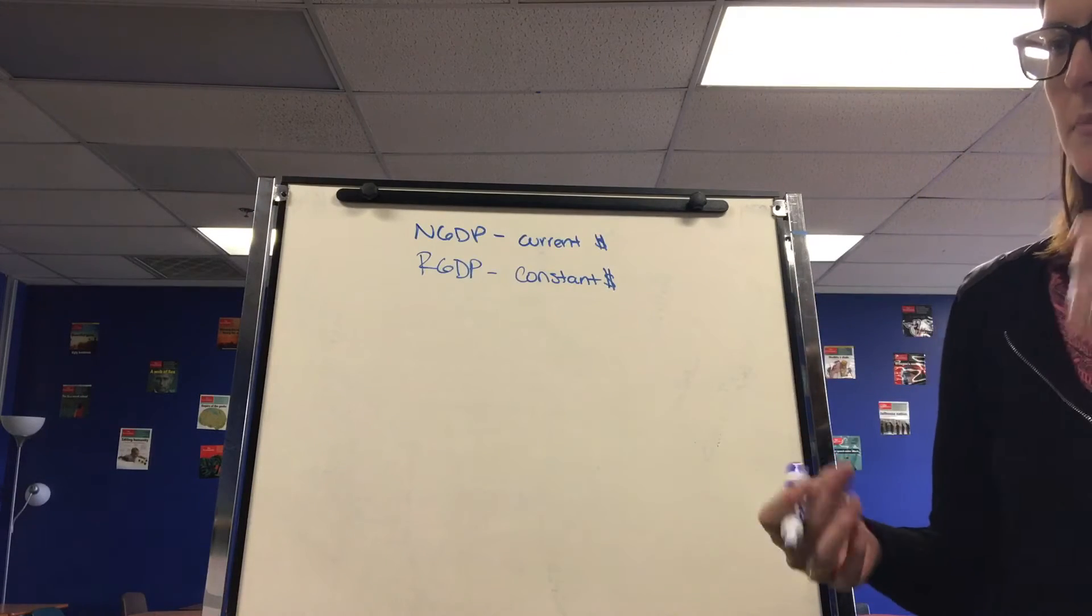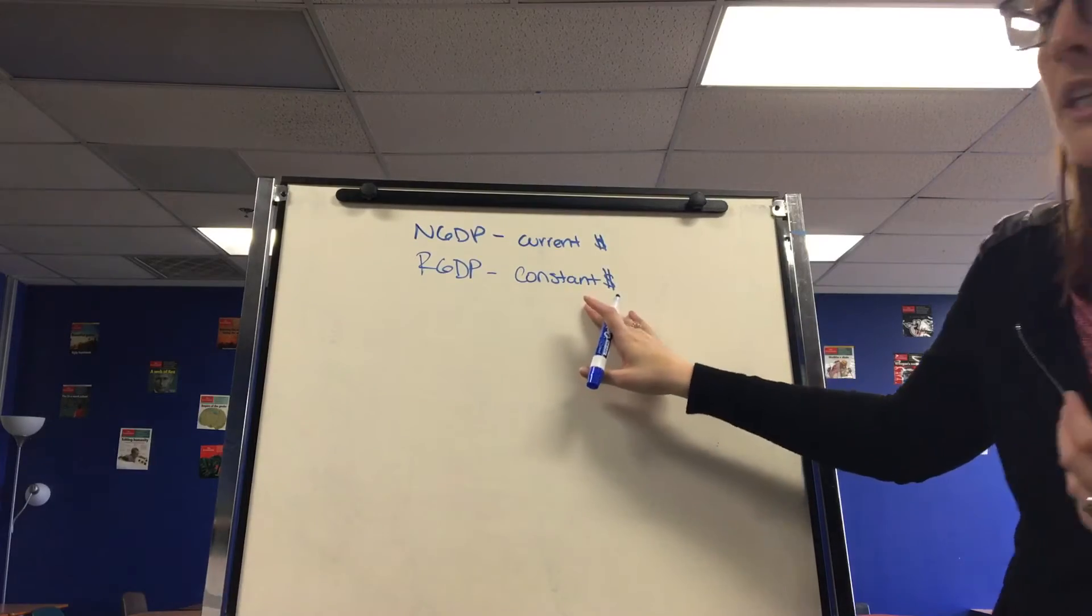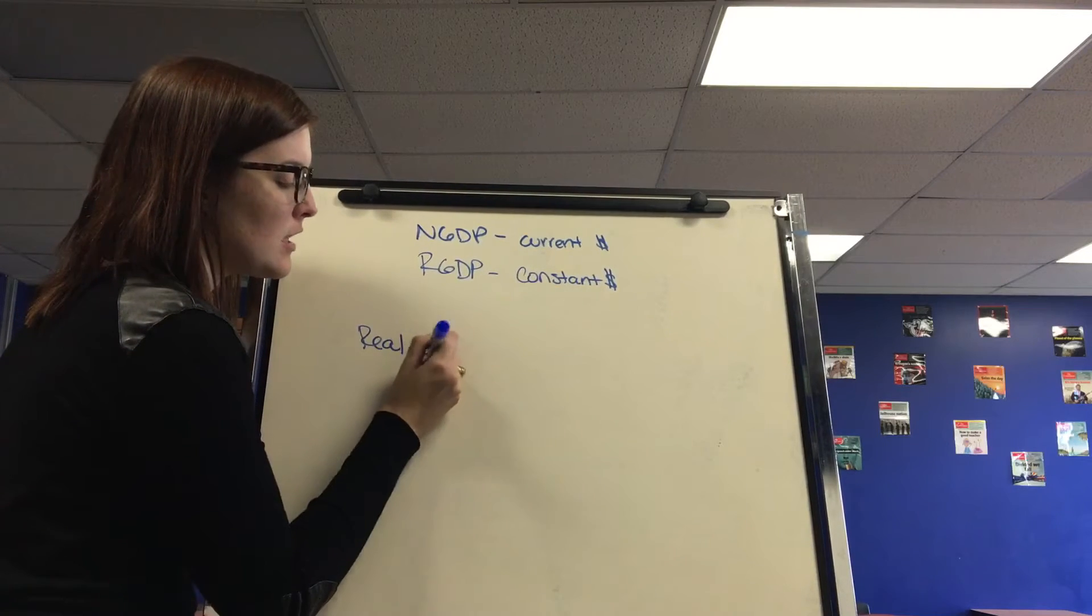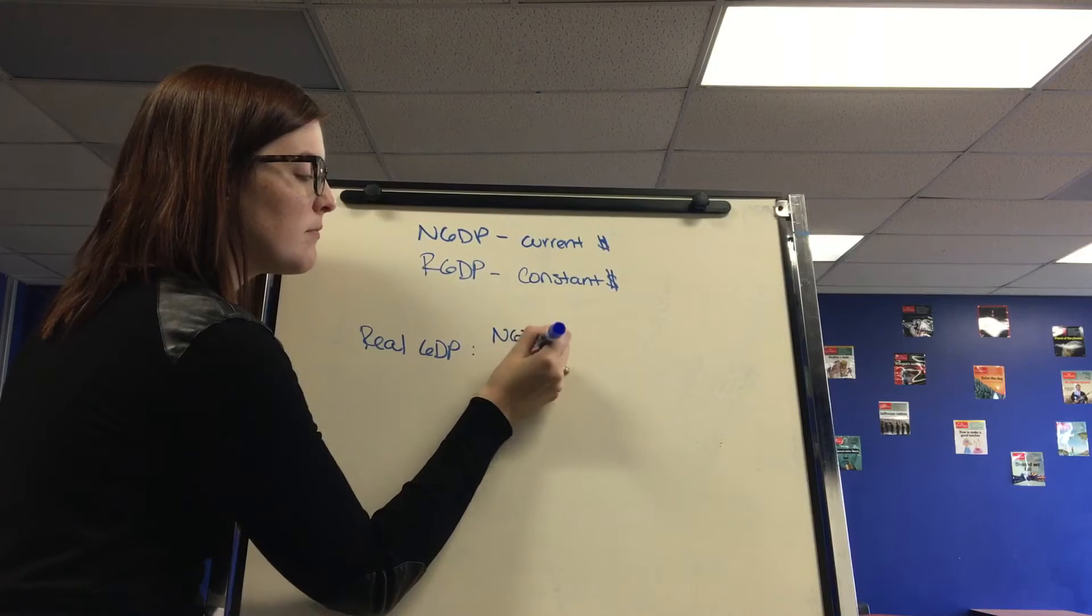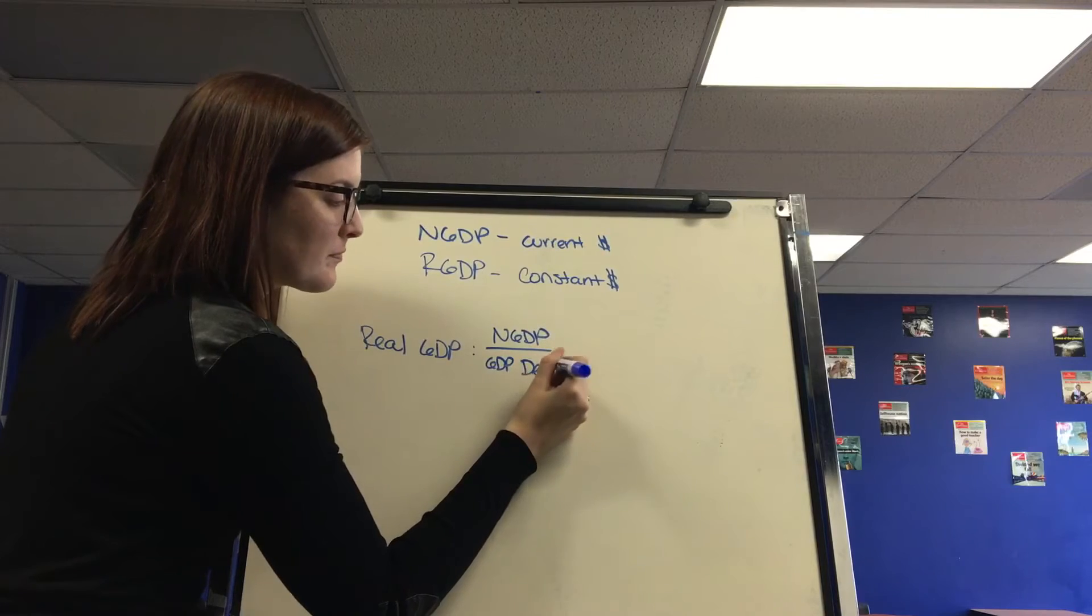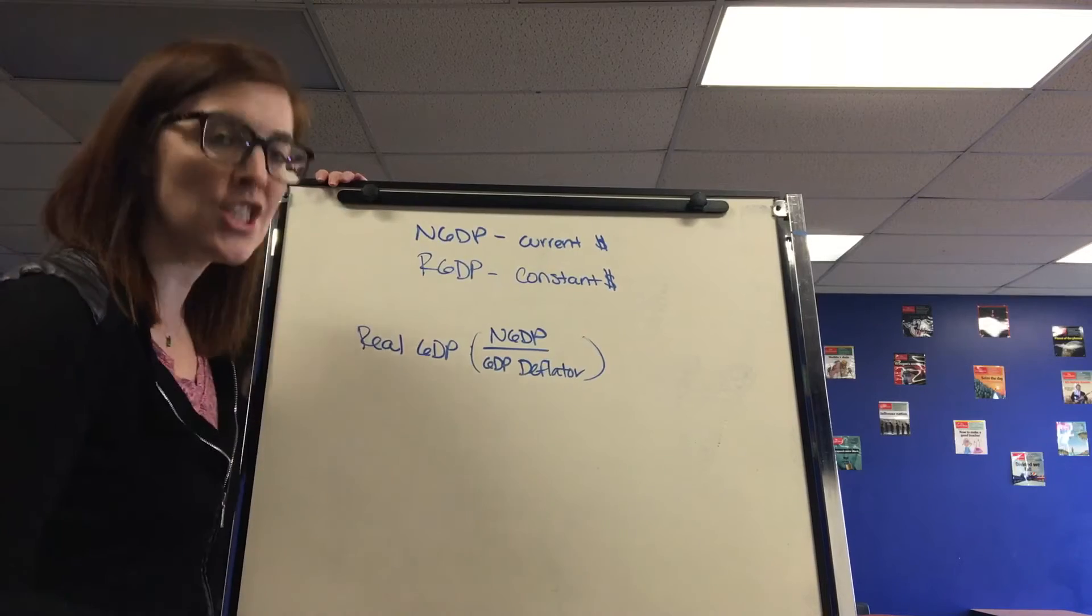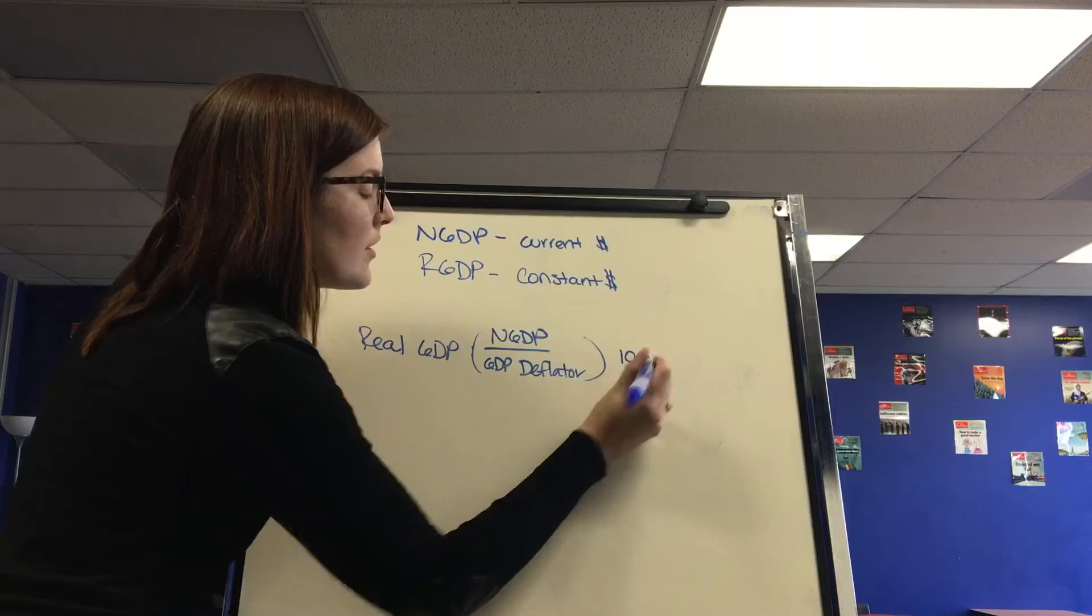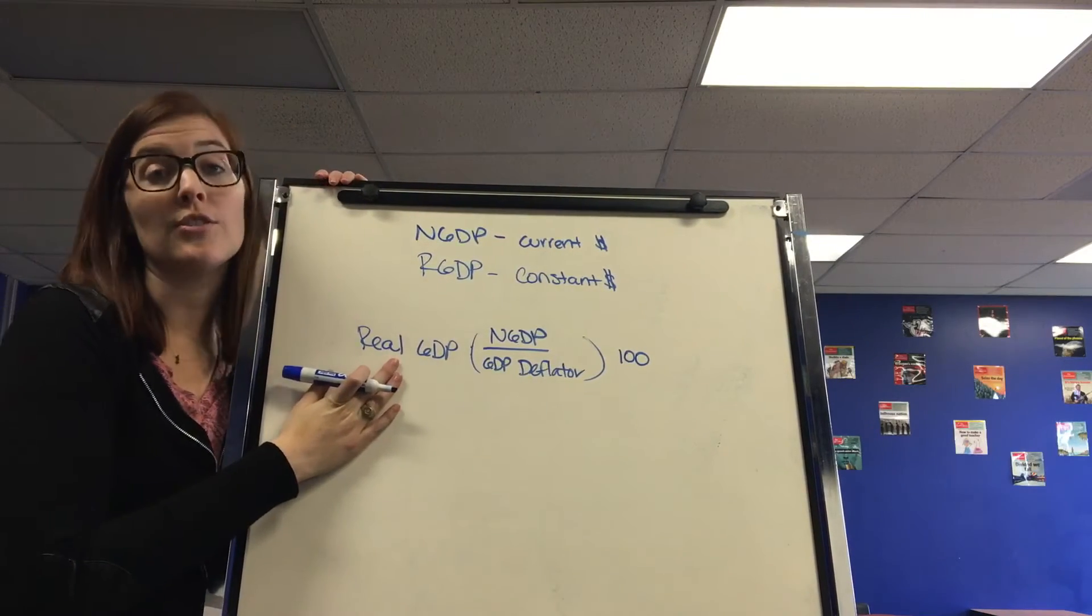This is where we get into some of the formulas. Sometimes we have to figure out what real GDP is. And to do this, to find the formula for real GDP, you would have to know what the nominal GDP is over this thing called the GDP deflator. The GDP deflator is a price index that measures inflation within GDP, how much inflation there was within GDP, and then times this by 100. So this would adjust the nominal, take out the inflation, and give you the real GDP.